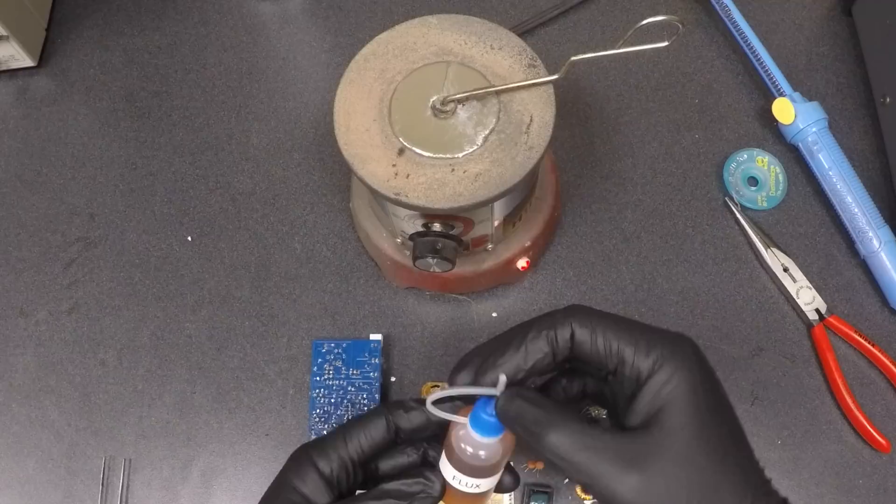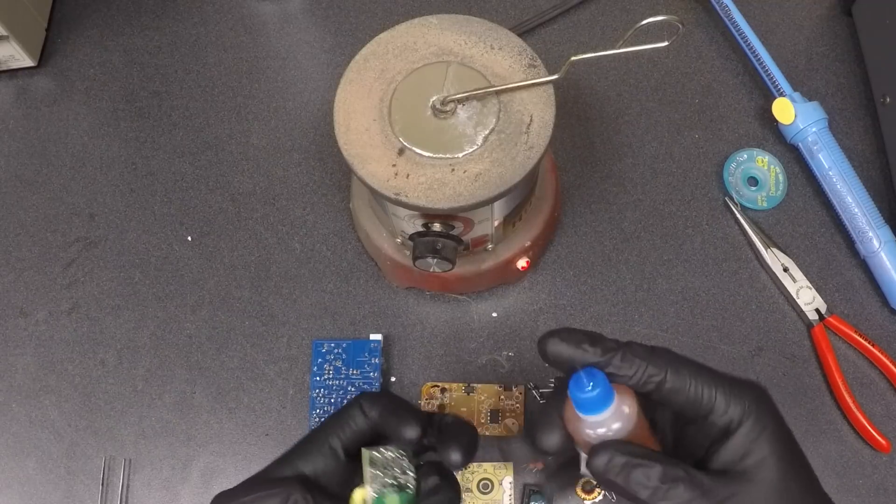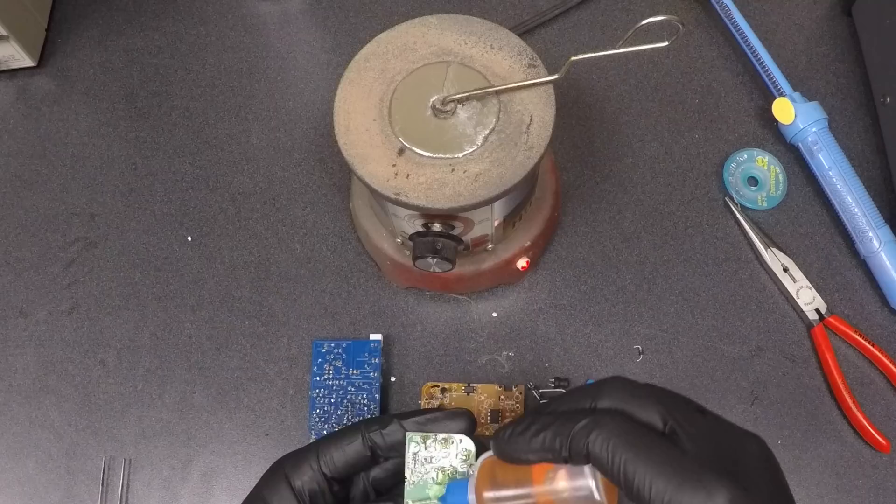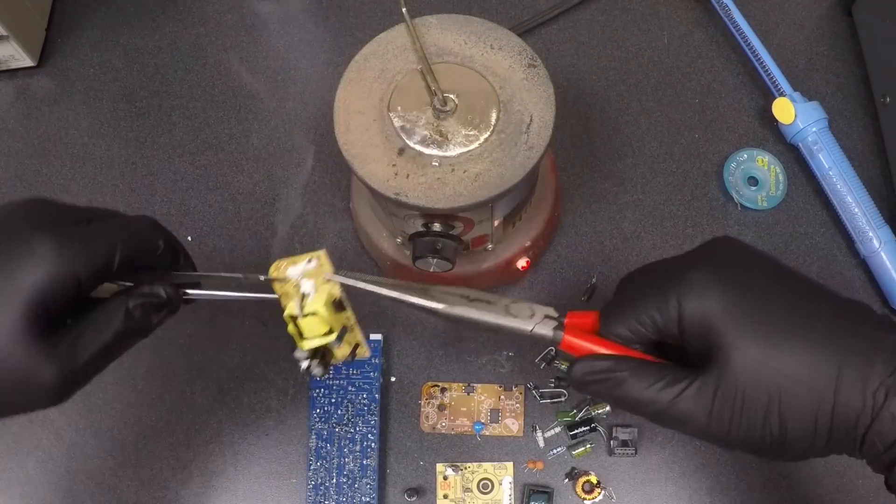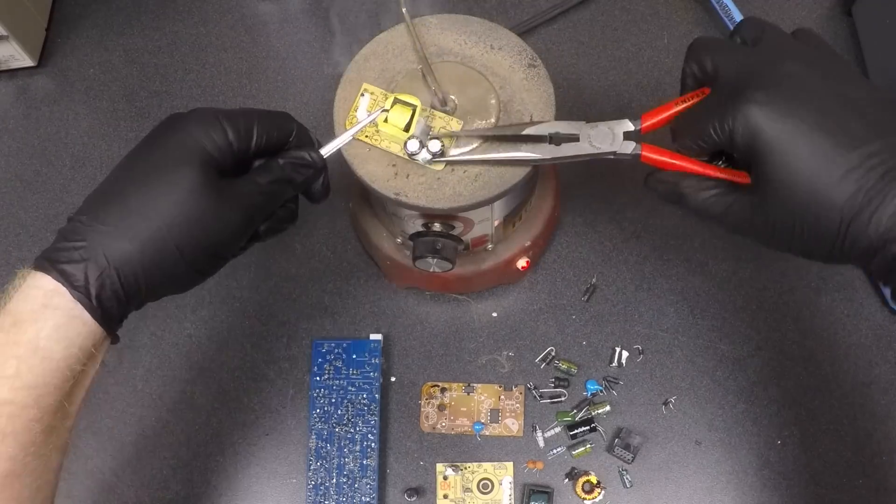I like to use this first technique if I don't plan on keeping the board. I coat the parts I'm interested in with flux. This step isn't necessary, but it does speed things up a bit. After that, I just hold the board up to a topped off solder pot and use pliers to remove any parts I want to keep.